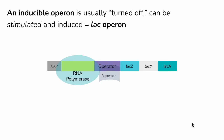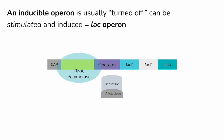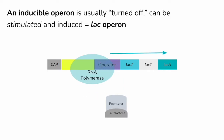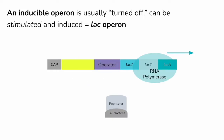But when lactose does show up, a version of it called allolactose can bind to the repressor, removing it from the operator. This allows RNA polymerase to move down the operon, and transcription can occur.